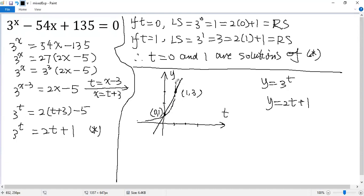Now you can see because there are only two intersections for these two functions, that means the equation only has two solutions, 0 and 1.